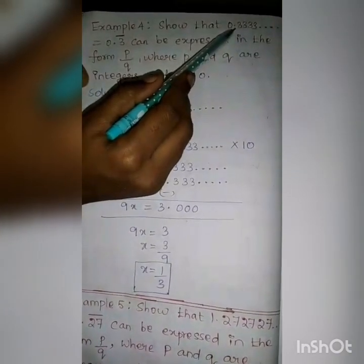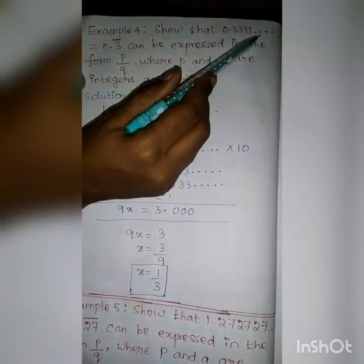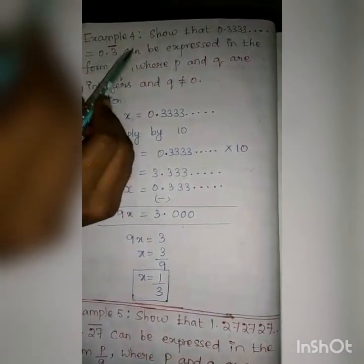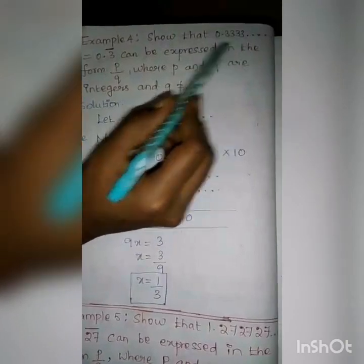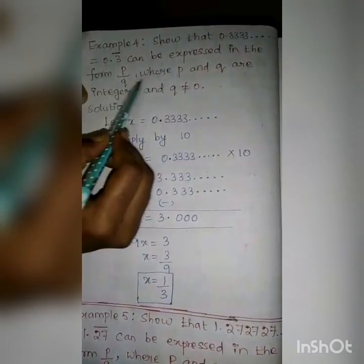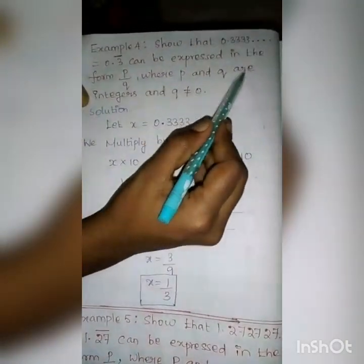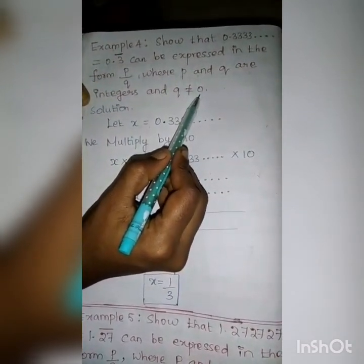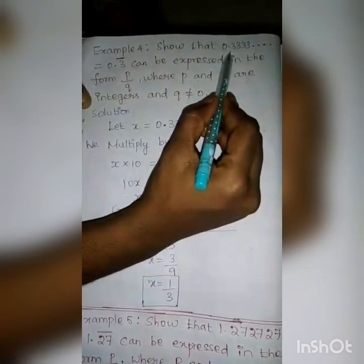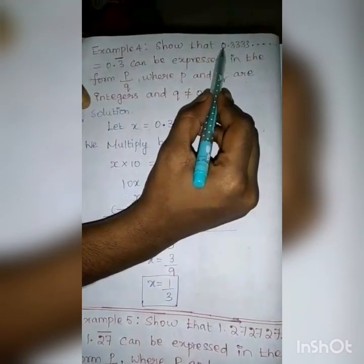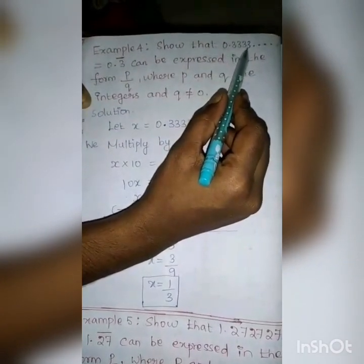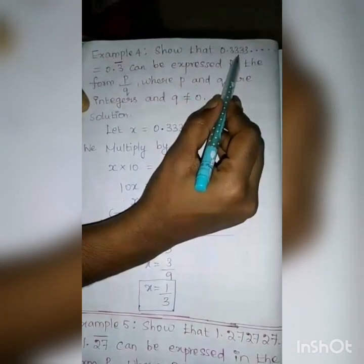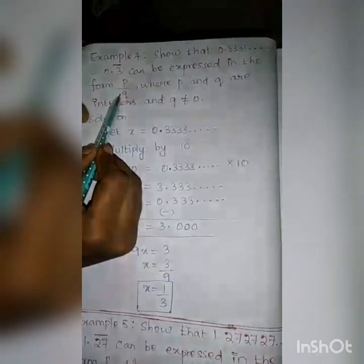Show that 0.3333 etc., equal to 0.3 bar, can be expressed in the form P by Q where P and Q are integers and Q not equal to 0. In your question, decimal form is given — 0.3333 etc. is in the form of decimal. You have to write the decimal form in P by Q form.